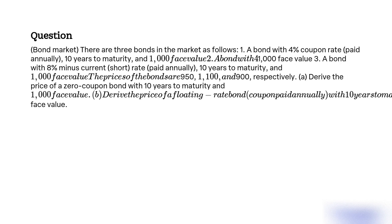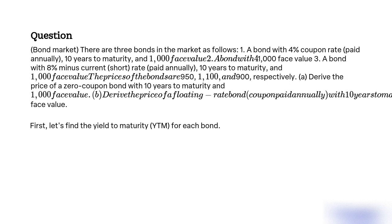The objective is to calculate the prices of a zero-coupon bond and a floating-rate bond, with 10 years to maturity and $1,000 face value, given the prices of three other bonds in the market with different coupon rates and current rates. First, let's find the yield-to-maturity (YTM) for each bond.